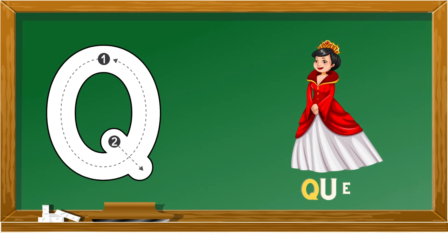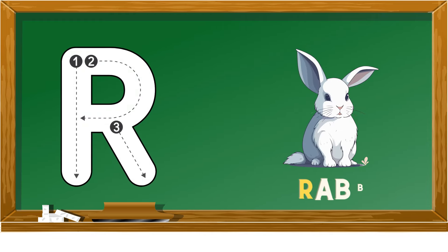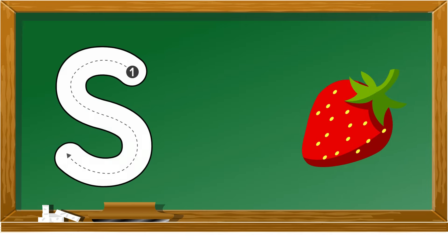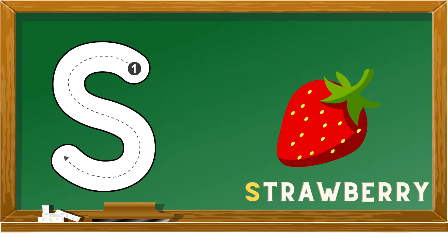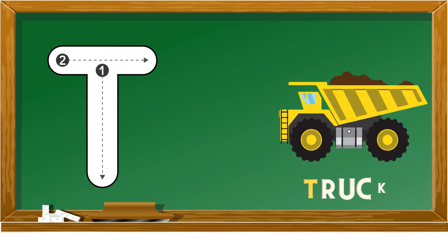Q is for queen, R is for rabbit, S is for strawberry, T is for truck.